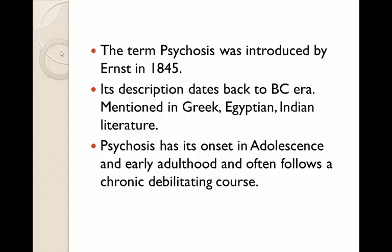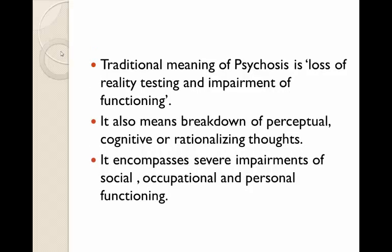Psychosis has its onset in adolescence and early adulthood and often follows a chronic debilitating course. The traditional meaning of psychosis is the loss of reality testing and impairment of function. It can also refer to a breakdown of perceptual, cognitive or rationalising thoughts, and it encompasses severe impairments of social, occupational and personal function.